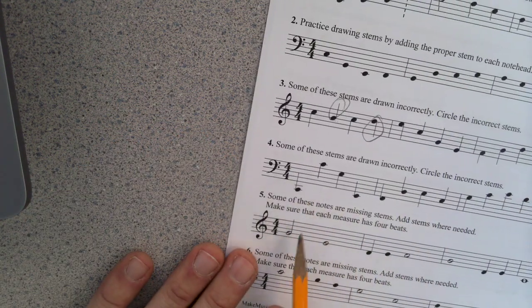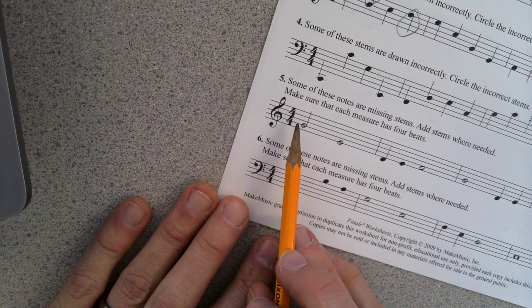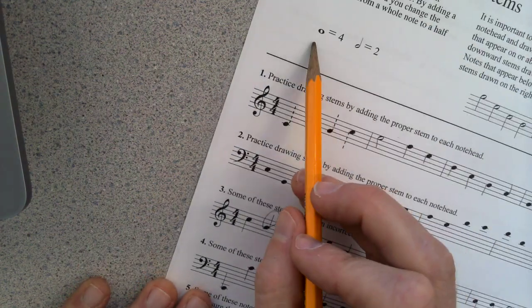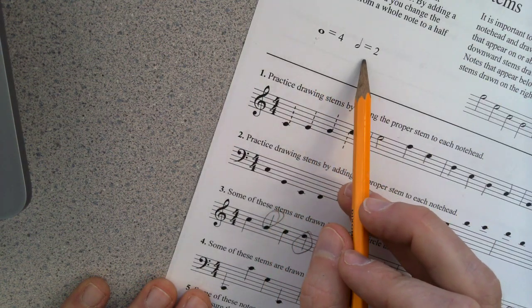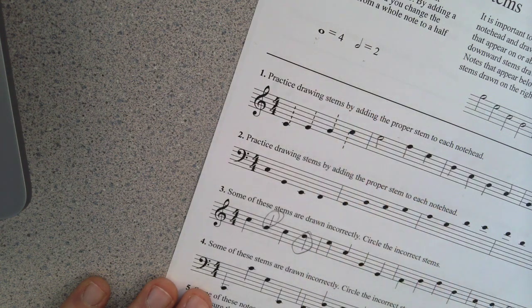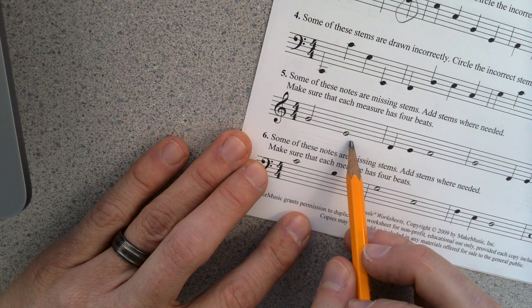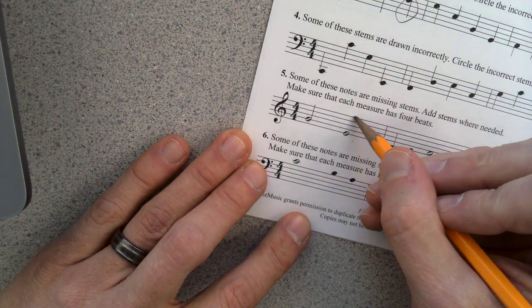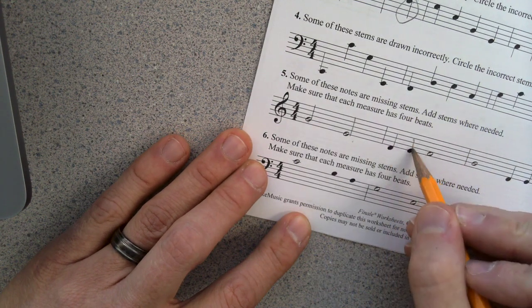Same thing here. Down here. Down here. Some of these are missing stems. Add stems where you need to. So you can see up here a whole note circle is good for four beats. Half note circle is good for two beats with the stem on it. So this can't be right because it's got two and then four. We need to make this one a two by adding a stem to it like that. Boom.